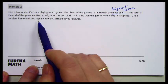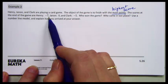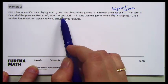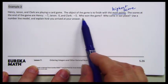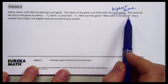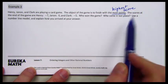The scores of the game are Henry, negative 7, Janan has 0 points, and Clark has negative 5 points. We want to know who won the game and who came in last place. We're going to use a number line model to explain how we arrived at our answer.